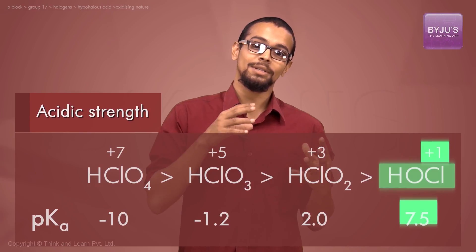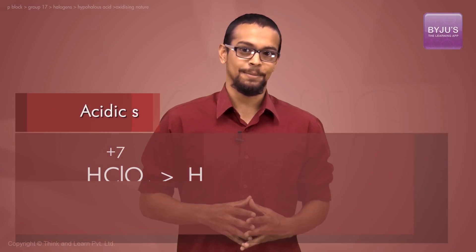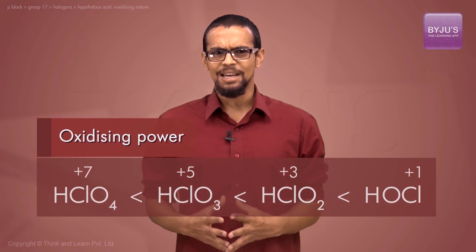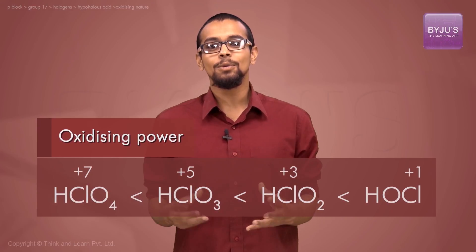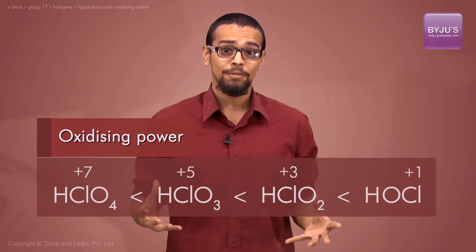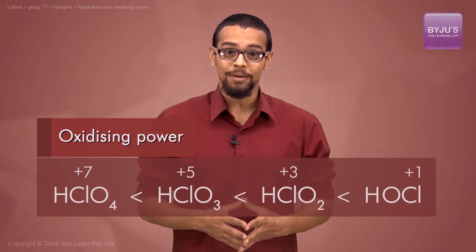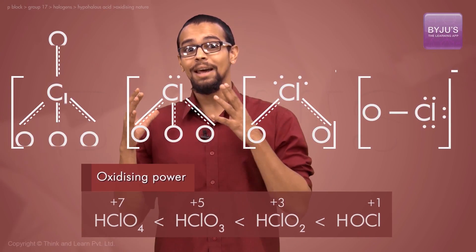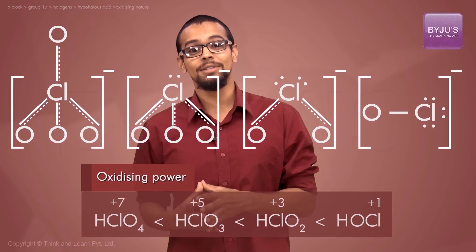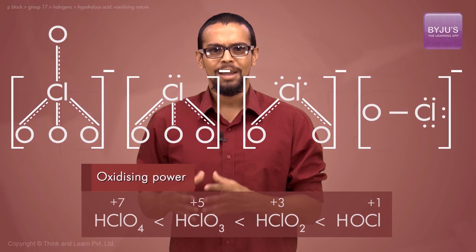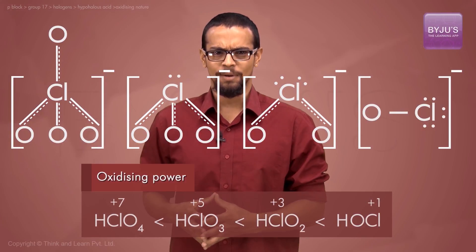Likewise, the oxidizing ability depends on the ease with which the oxygen can be released from the hypohalite ion. As we saw, the hypohalite ion where the halogen is in the higher oxidation state is more stable, implying the oxygen cannot be removed away from it.